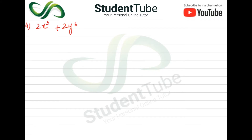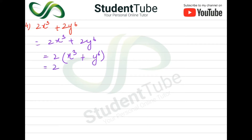Part 4: 2x³ plus 2y⁶. It is very easy. First, we will take 2 as common. Then we get 2 times (x³ plus y⁶). We can write y⁶ as (y²)³, so this becomes 2 times (x³ plus (y²)³).